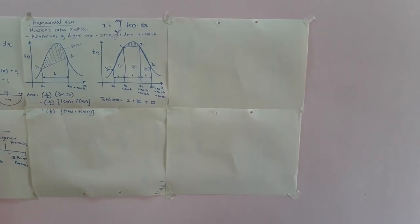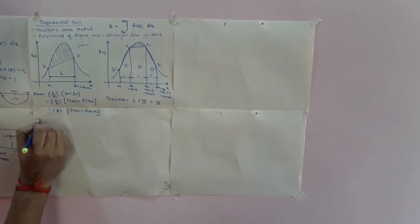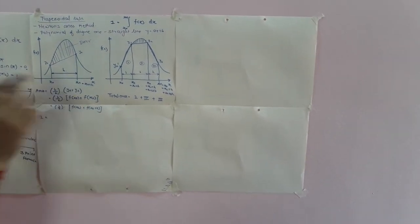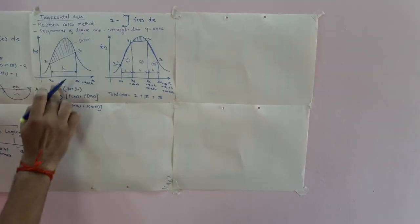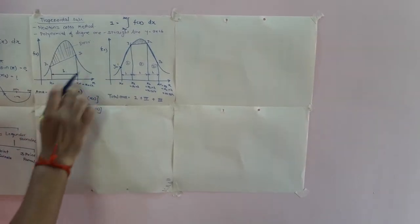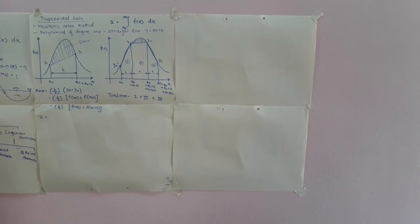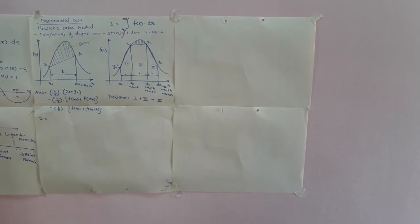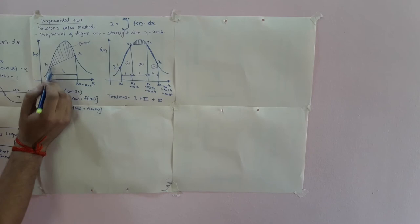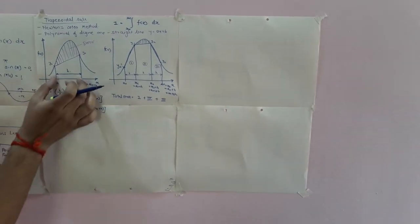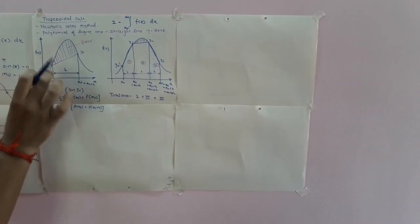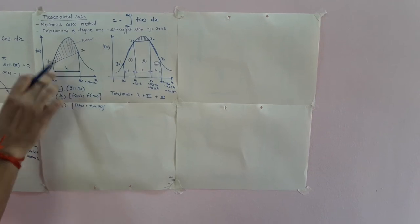The area of the first strip uses the same formula: h/2 × (y0 + y1). Each strip forms a trapezoid — that is why it is called the trapezoidal rule. In simple language, the formula is: height/2 × (sum of two parallel sides), where the two parallel sides are the y-values at each end of the strip.